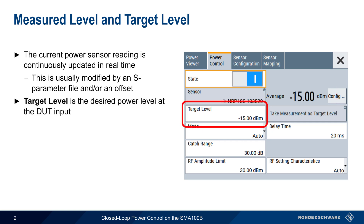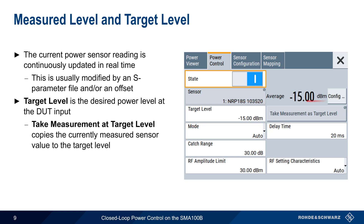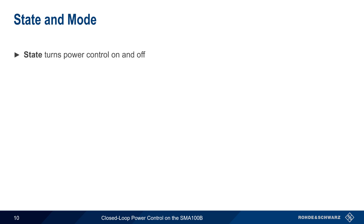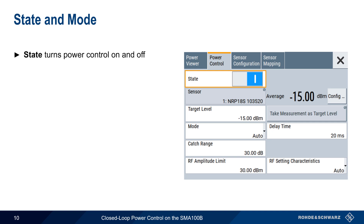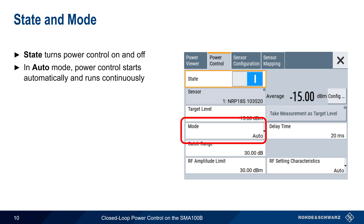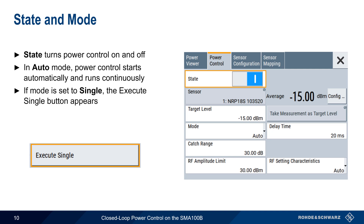The Target Level parameter is the desired power level at the DUT input, and this is the power that the SMA will hold constant when closed-loop power control is active. The Take Measurement at Target Level button copies the currently measured sensor value to the target level. Although the sensor power is read continuously, closed-loop power control is only active when the state switch is enabled. Power control can run in two modes. In the default auto mode, power control starts automatically and runs continuously without user intervention. If mode is switched to single, then the Execute Single button appears, which can be used to execute a single power control measurement cycle.